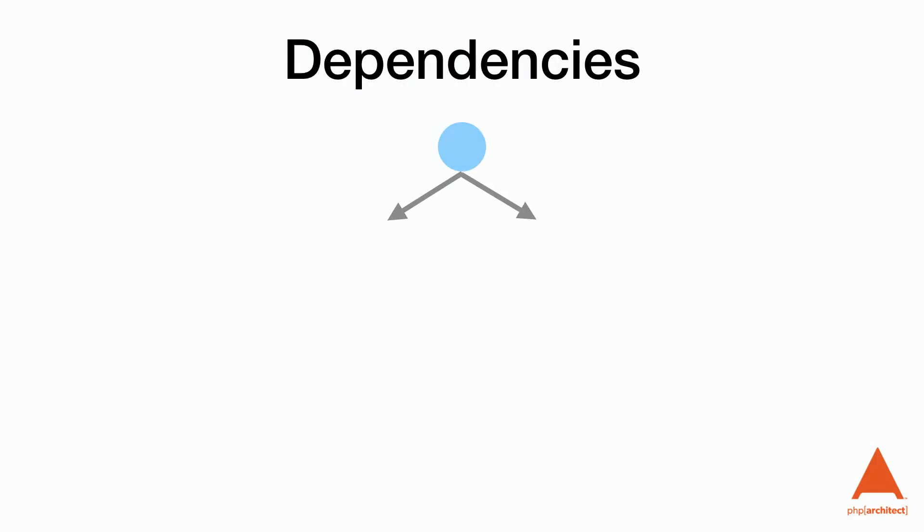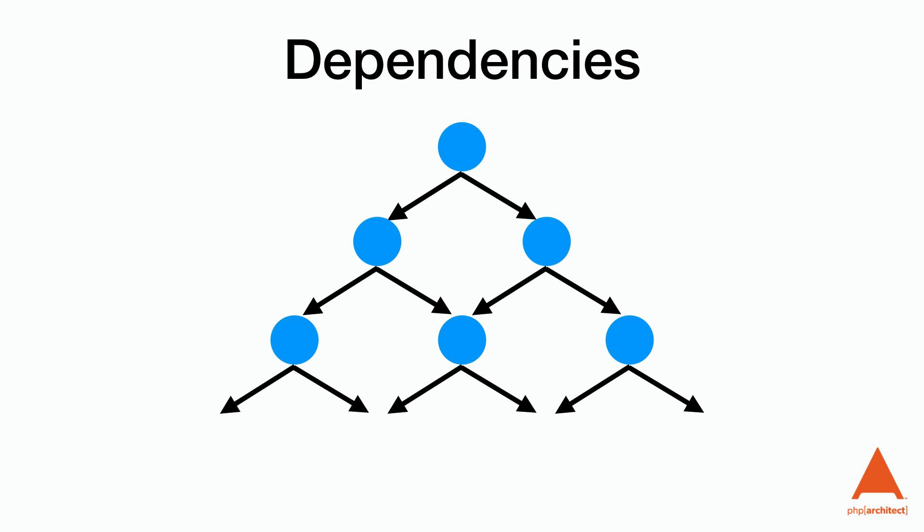The amazing thing about Composer and all the modern package managers is that it allows our dependencies to have dependencies, which in turn might have more dependencies — it's really just dependencies all the way down. Each one uses semver, but two libraries might support different major versions of the same library. Maybe both use the Faker library, and only one supports version one, but the other supports versions one and two. Composer will determine the best option for us, though we could be locked into a previous major release until all the libraries are upgraded.